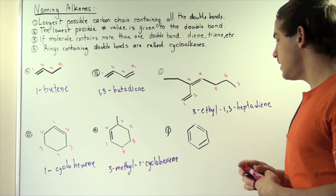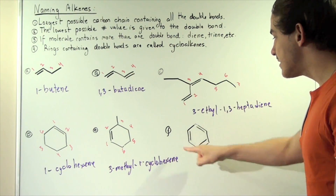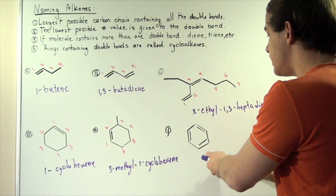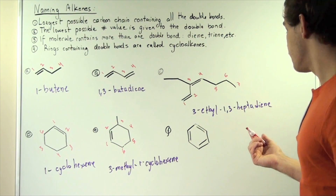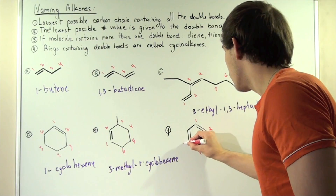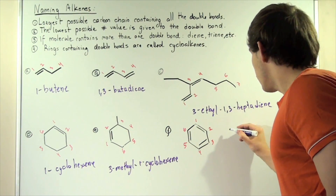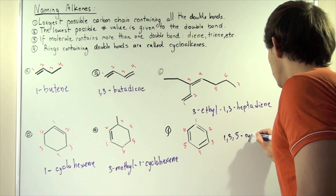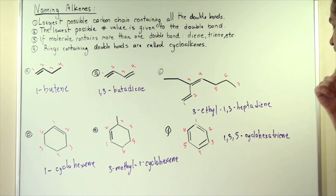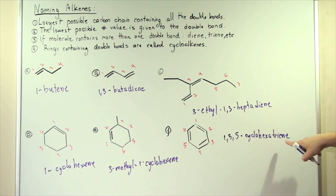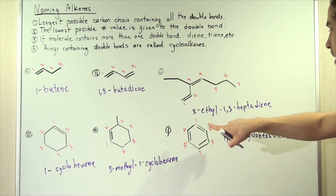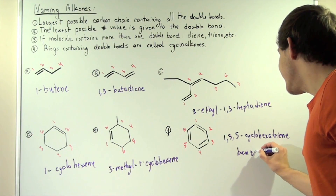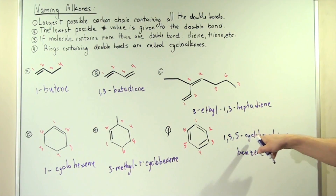Finally, compound F has a cyclic six-carbon backbone and three double bonds. It doesn't matter where we begin numbering because this is a symmetrical compound. Numbering: one, two, three, four, five, six. We have double bonds at positions 1, 3, and 5, giving us 1,3,5-cyclohexatriene — 'triene' for three double bonds in a six-membered cyclic ring. This compound is also simply known as benzene. So benzene is the same thing as 1,3,5-cyclohexatriene.